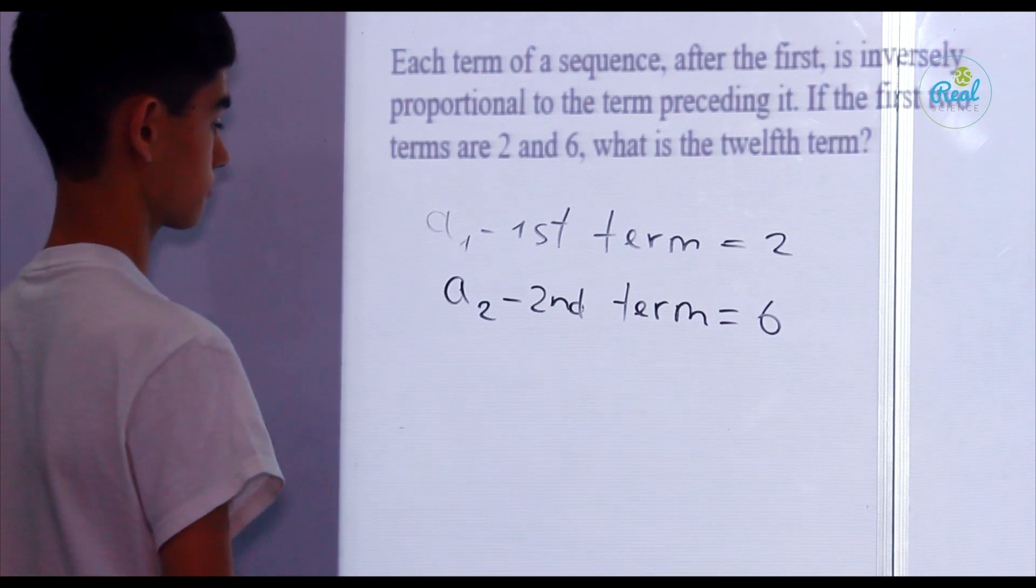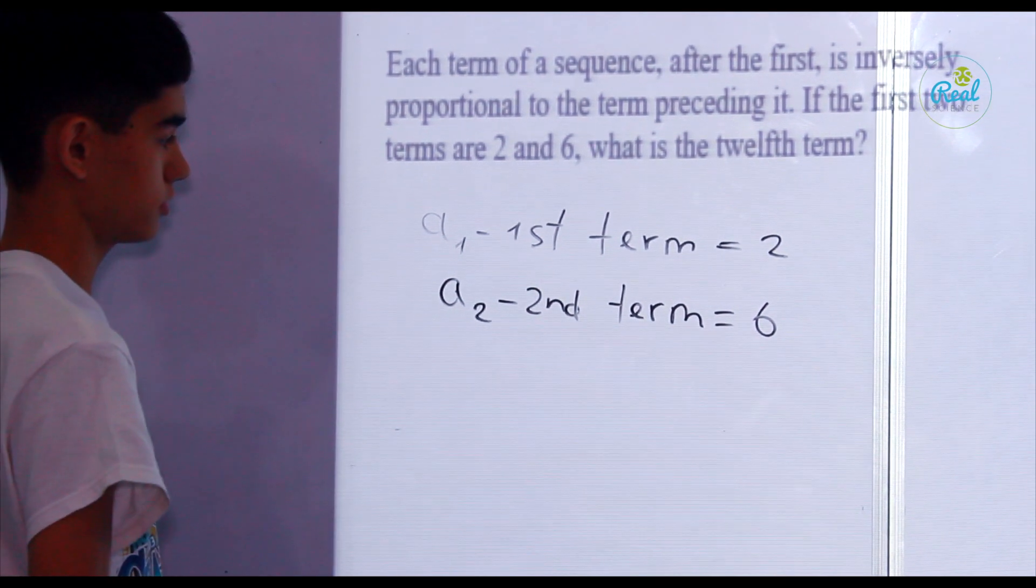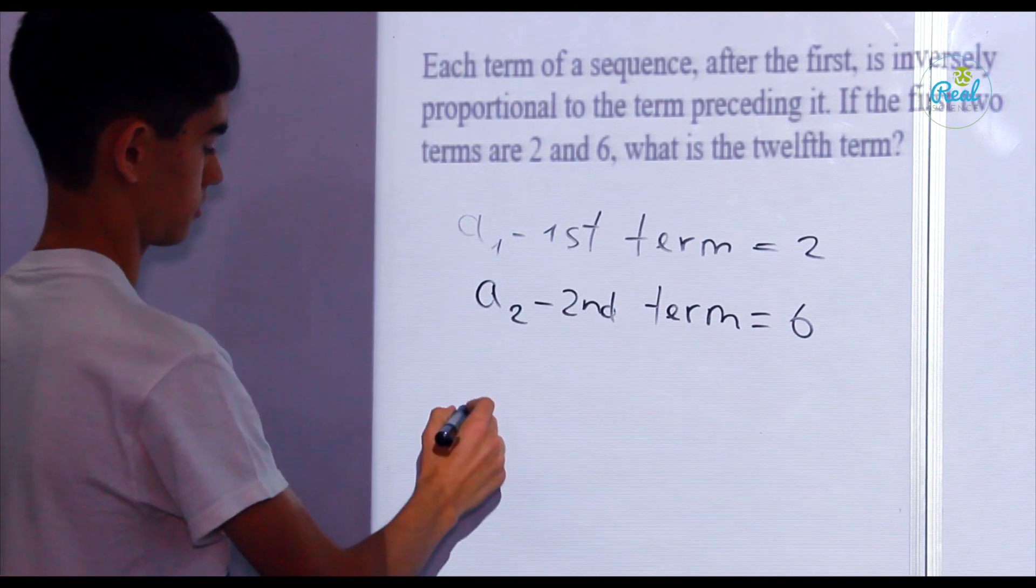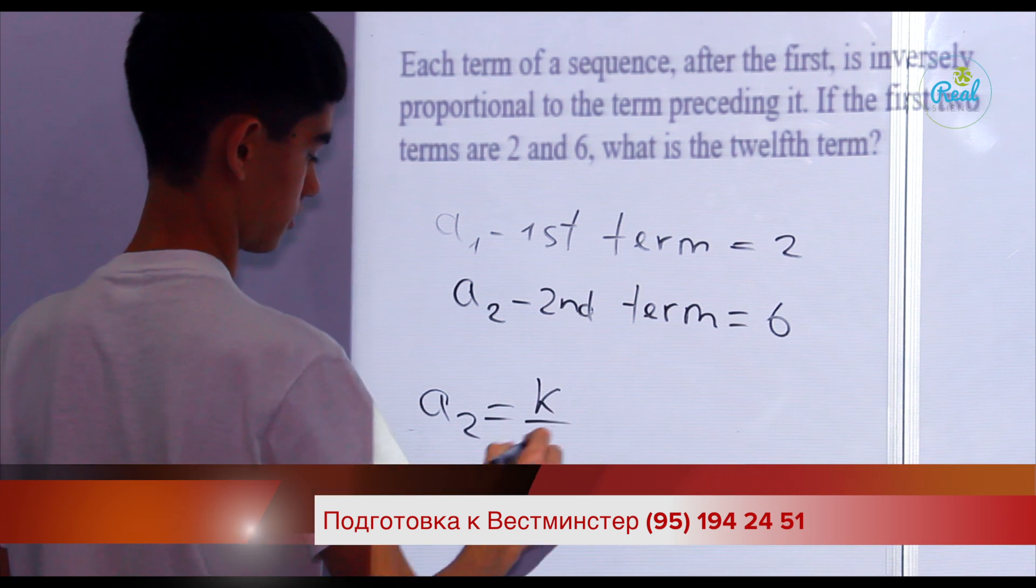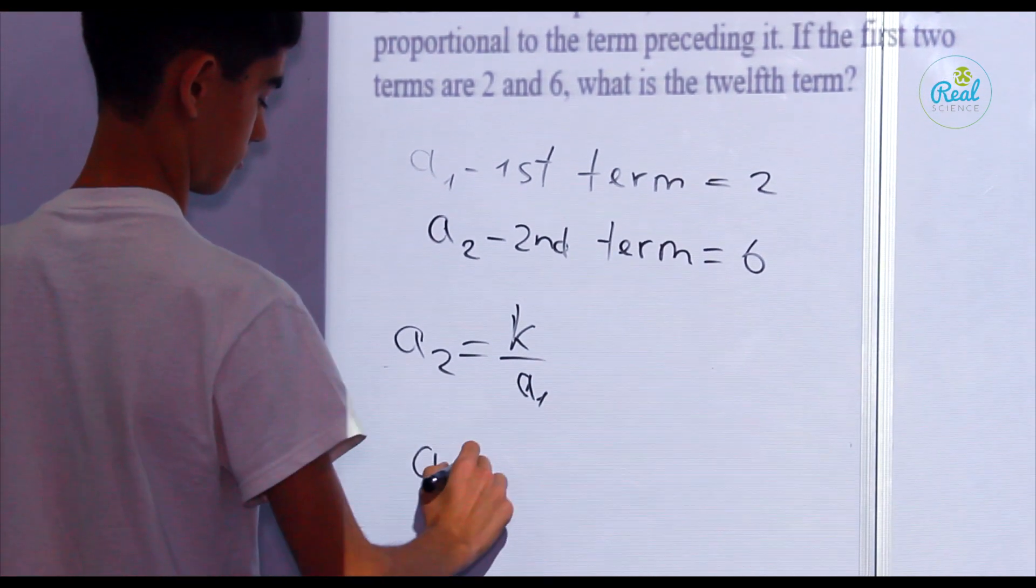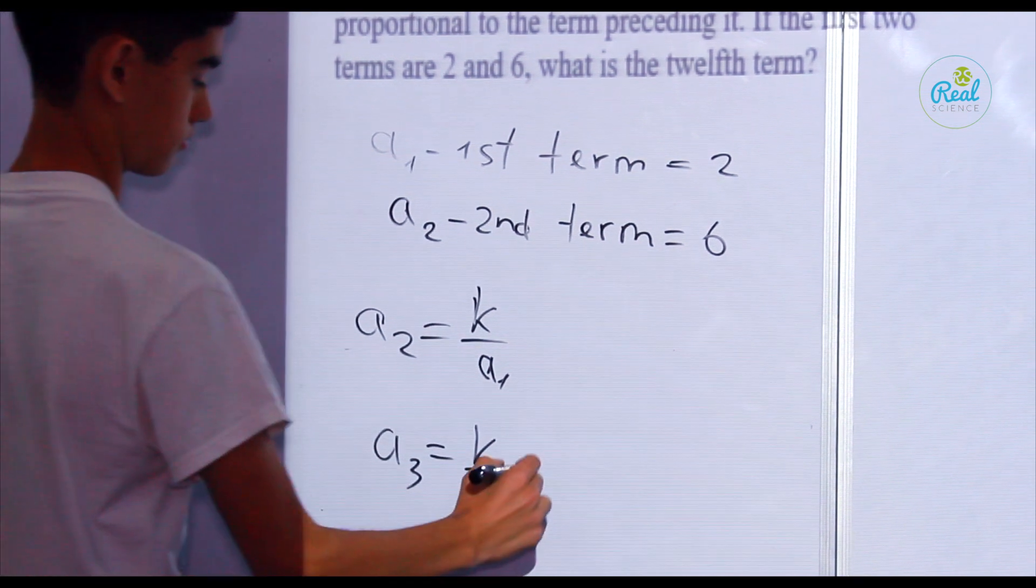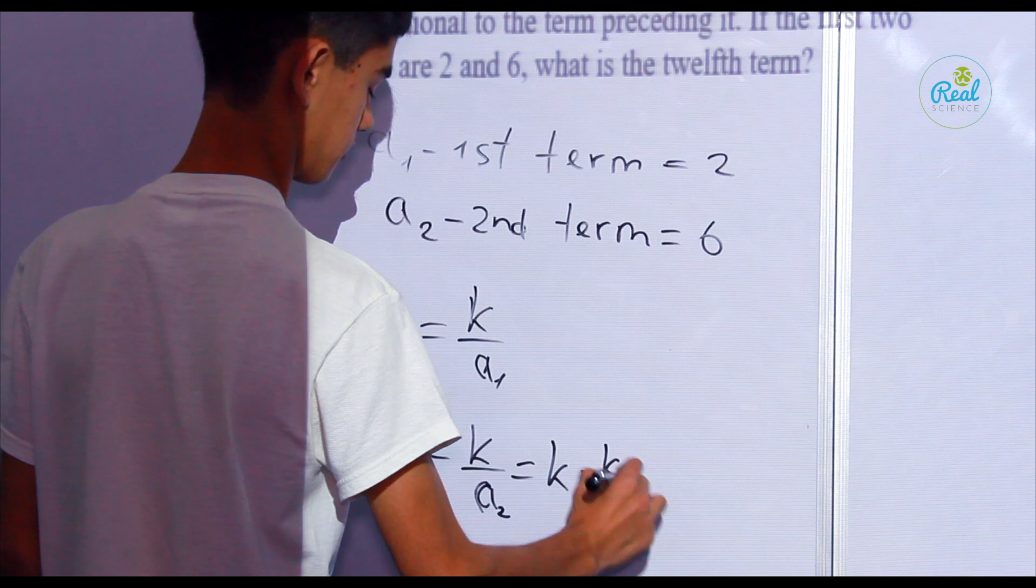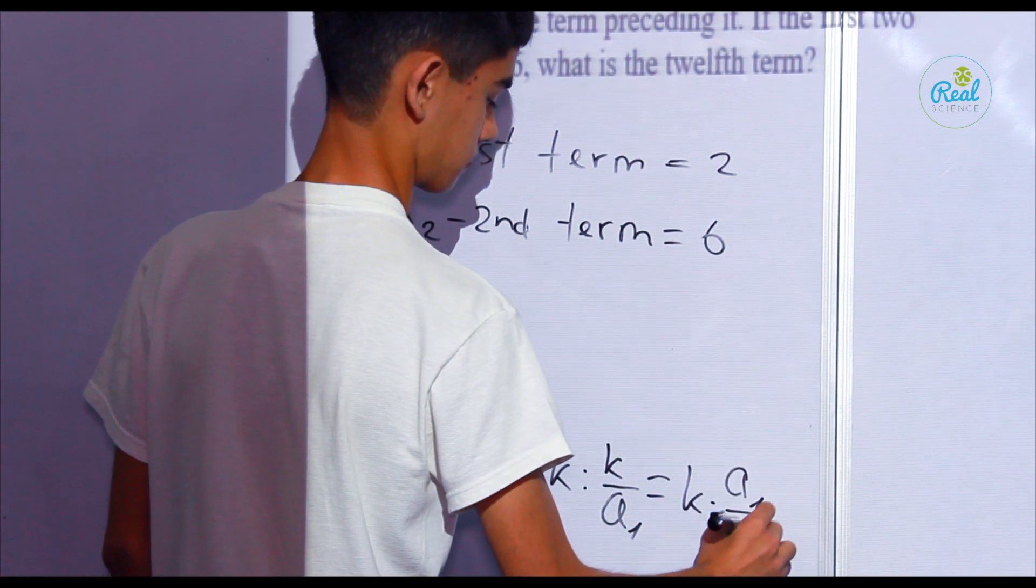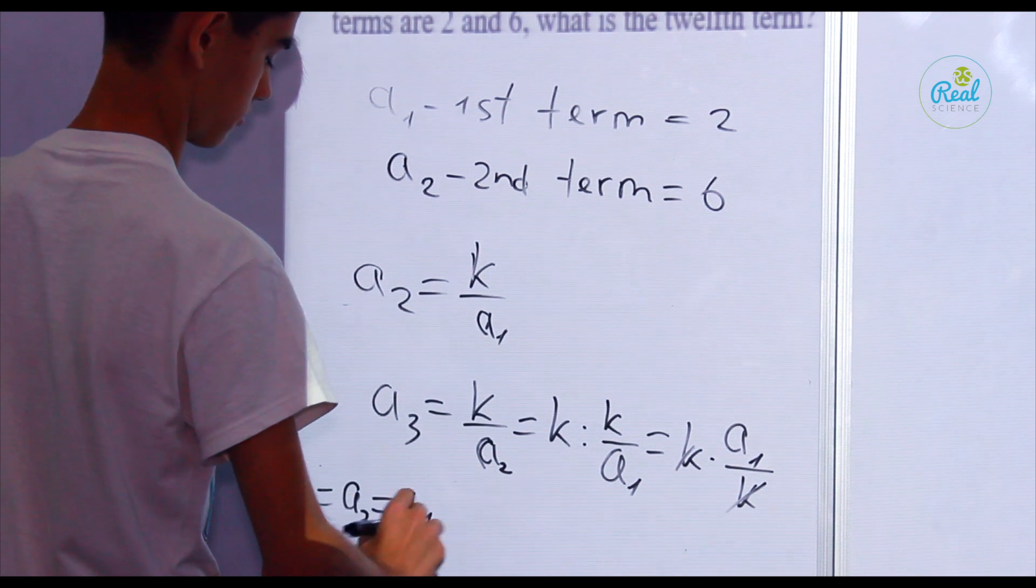And as we know that a2 is inversely proportional to a1, and inversely proportional is denoted as a2 equal to k divided by a1. And next, third term is k divided by k divided by a1. And this is the result: a3 equal to a1.